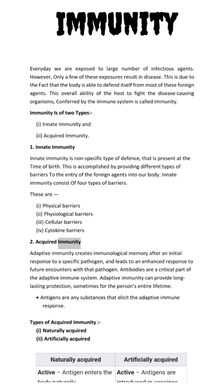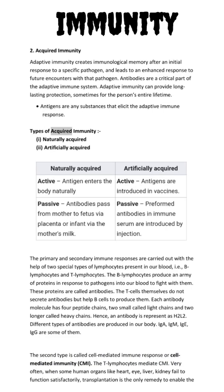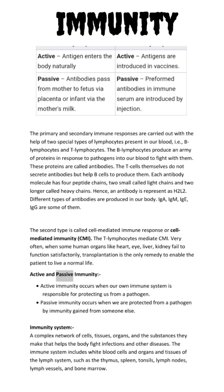Acquired immunity. Adaptive immunity creates immunological memory after an initial response to a specific pathogen and leads to an enhanced response to future encounters with that pathogen. Types of acquired immunity: naturally acquired and artificially acquired. Active immunity occurs when our own immune system is responsible for protecting us from a pathogen. Passive immunity occurs when we are protected from a pathogen by immunity gained from someone else.